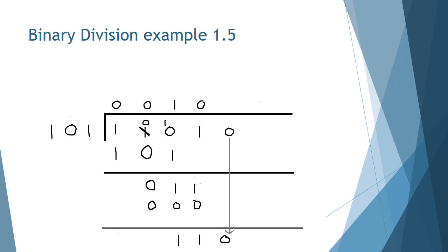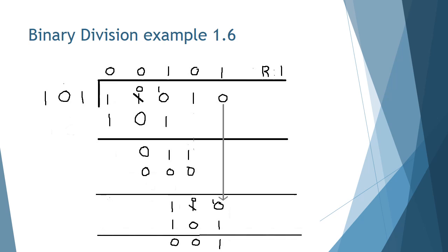So now that this is completed, we bring down the 0 in the dividend. Next, we ask, how many times 1-0-1 can go into 1-1-0? The answer we get for that is 1. So a 1 is added to the quotient.